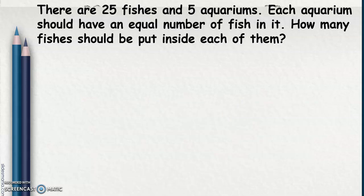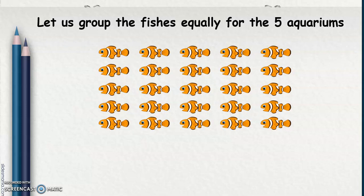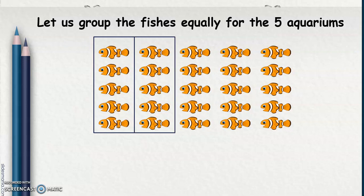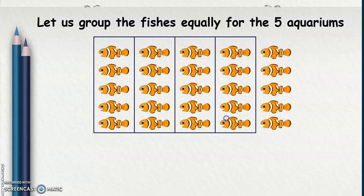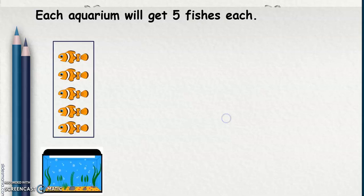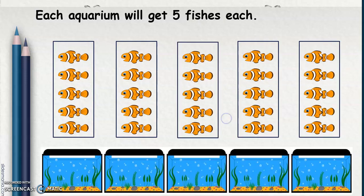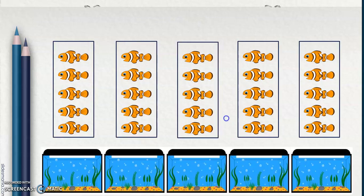Now, there are 25 fishes and 5 aquariums. Each aquarium should have an equal number of fish in it. How many fishes should be put inside each of them? Let us group the fishes equally for the 5 aquariums. We have 5 in each group. Each aquarium will get 5 fishes each. So 25 divided by 5 equals 5.